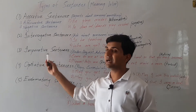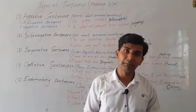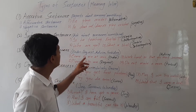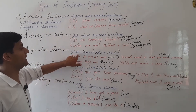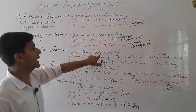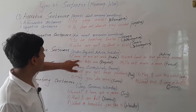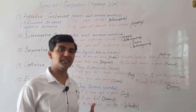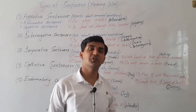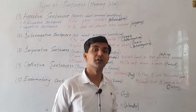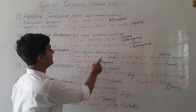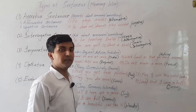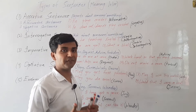Then after that we have imperative sentences. Imperative sentences belong to order, request, advice, or forbidding something. Here is an example of order: 'Come to me at once.' When some senior person says to a junior person, the senior orders the junior to do something. Then we have a request: 'Please help me.' This sentence shows that it's a sentence of request.